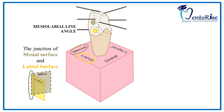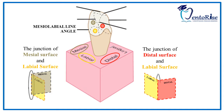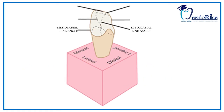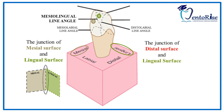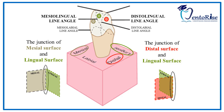Likewise, the junction of the distal surface represented in red and the labial surface represented in yellow forms a line angle which is called the distolabial line angle. Similarly, the junction of the mesial surface represented in grey and lingual surface represented in green forms the mesiolingual line angle. The junction of the distal surface represented in red and lingual surface represented in green forms the distolingual line angle.